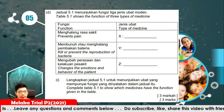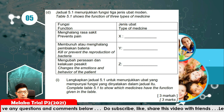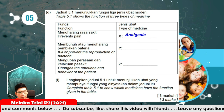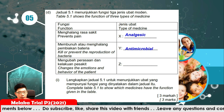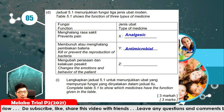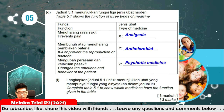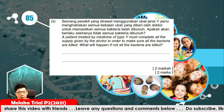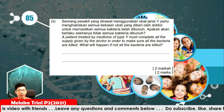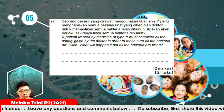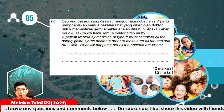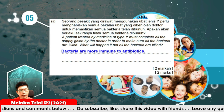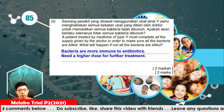A table shows the function of 3 types of medicine. To prevent pain, the type of medicine should be analgesic. To kill or prevent the reproduction of bacteria, it will be antimicrobials. To change the emotion and behaviour of the patient, it should be psychotic medicine. If a patient does not complete all the antibiotics given by the doctor, the bacteria become more immune to the antibiotics and a higher dose is needed for further treatment in future.